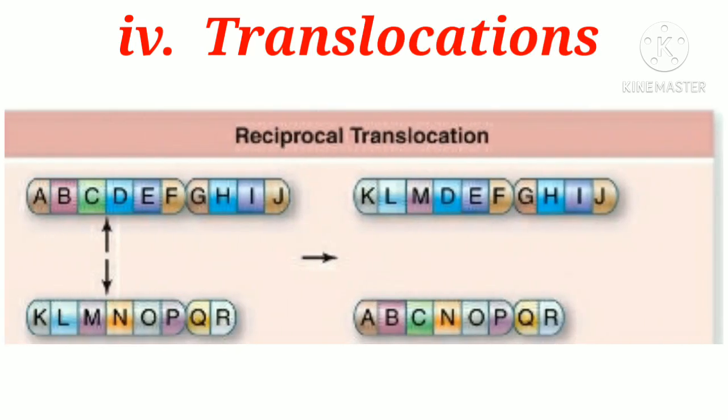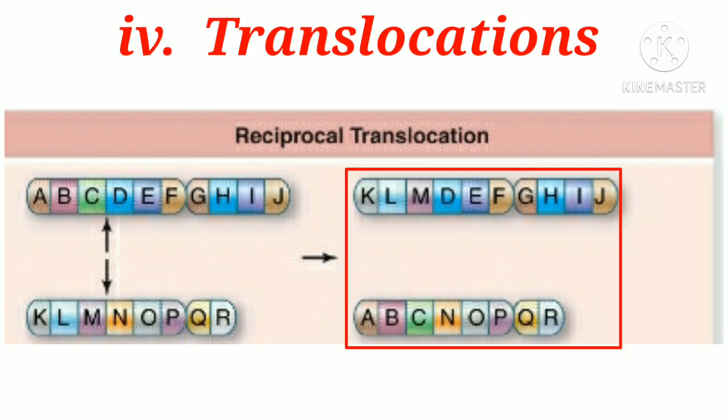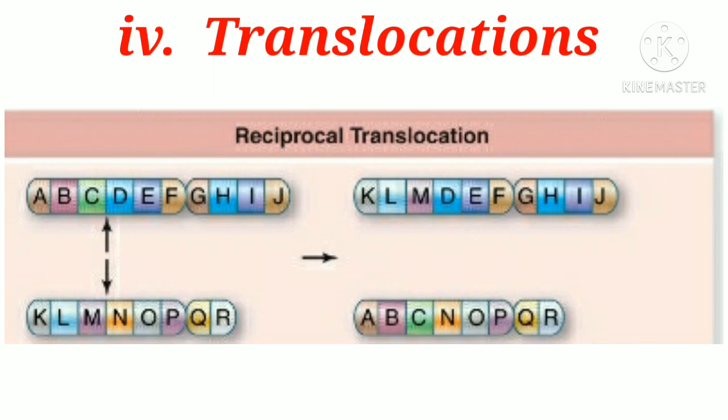The last type of chromosomal mutation is translocation. It can be caused by an abnormal synapsis event at meiosis, with incorrect chromosomes coming together. Here, the letters ABC and KLM represent chromosomes that are reciprocally translocated. This type of mutation is known as a chromosomal translocation mutation.